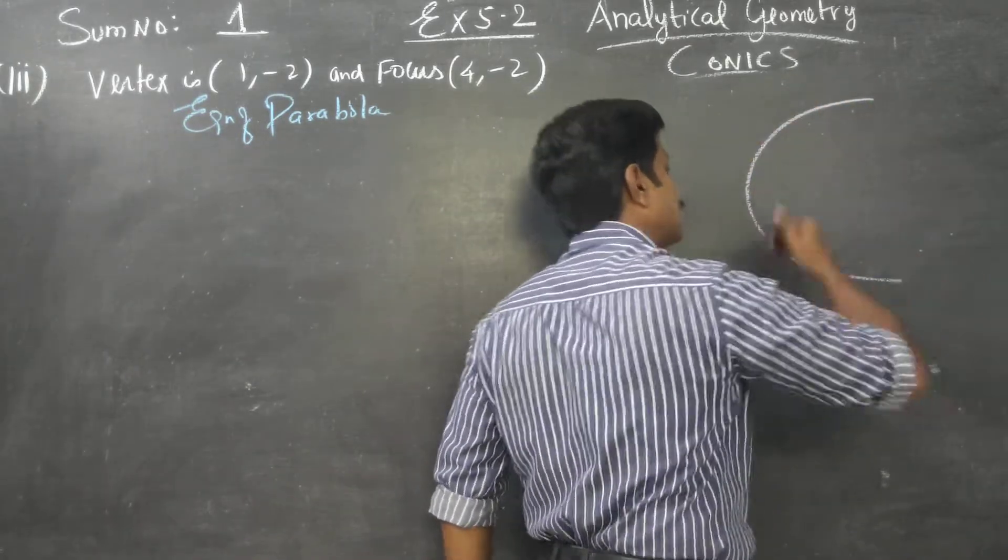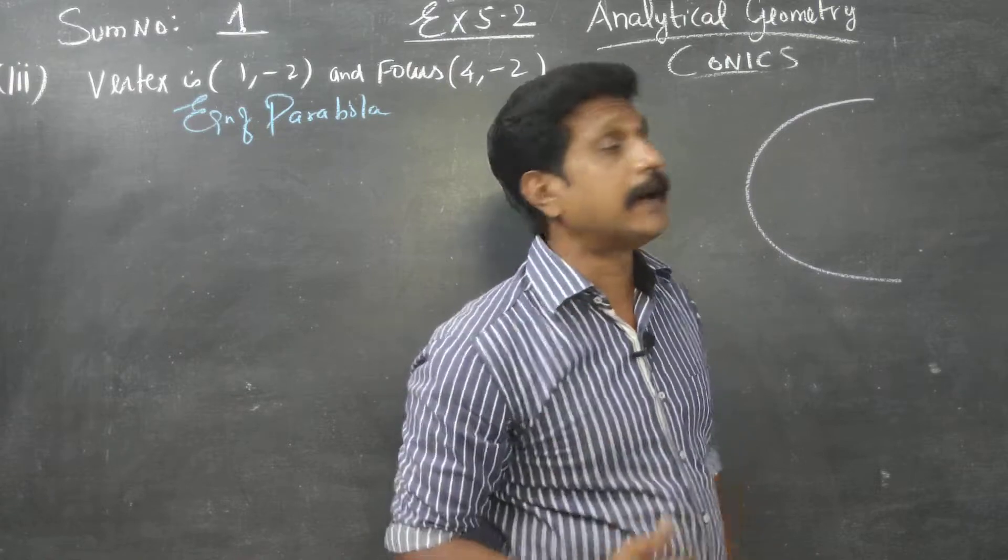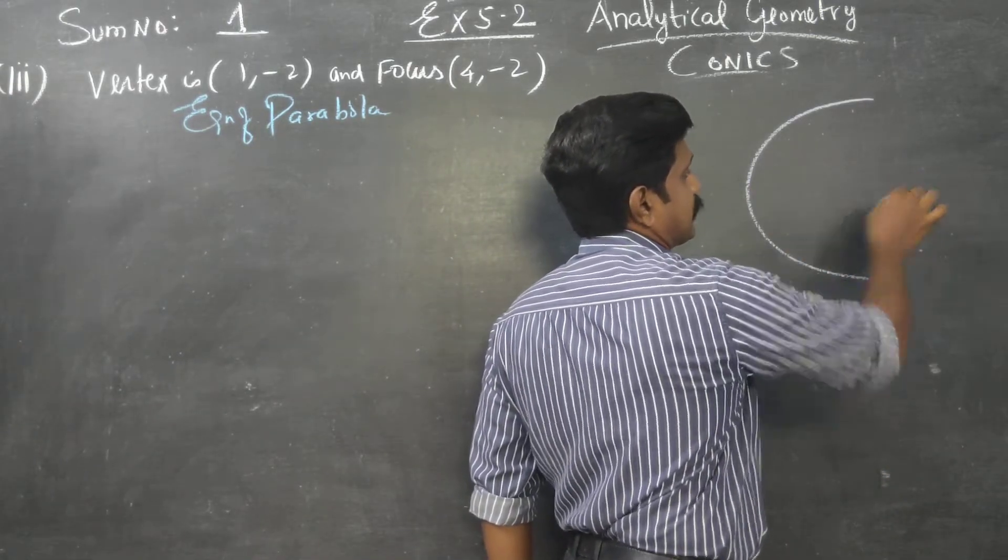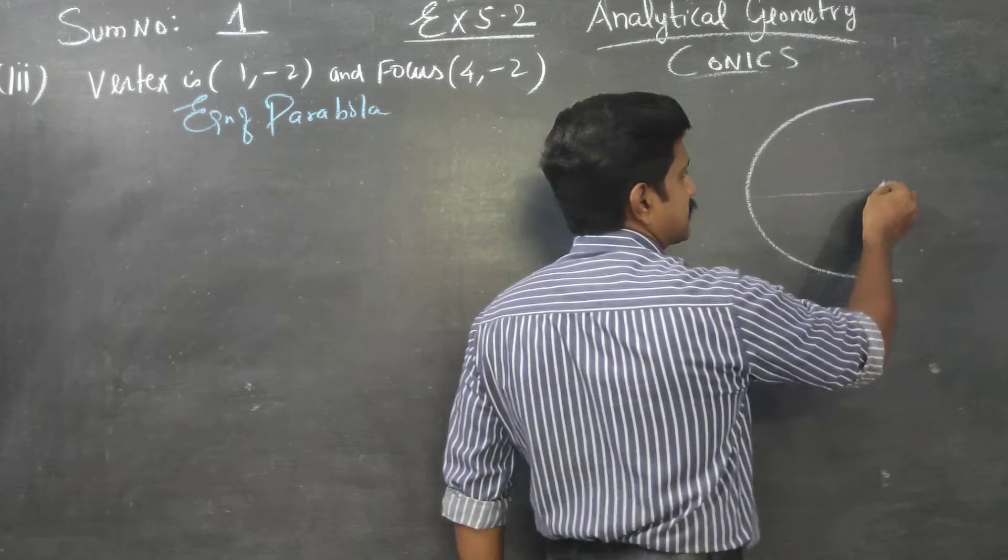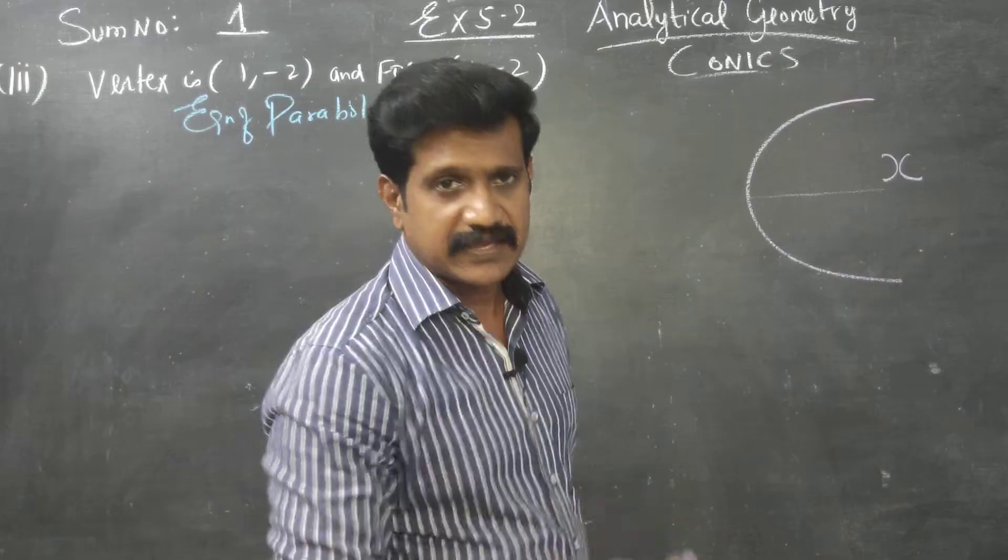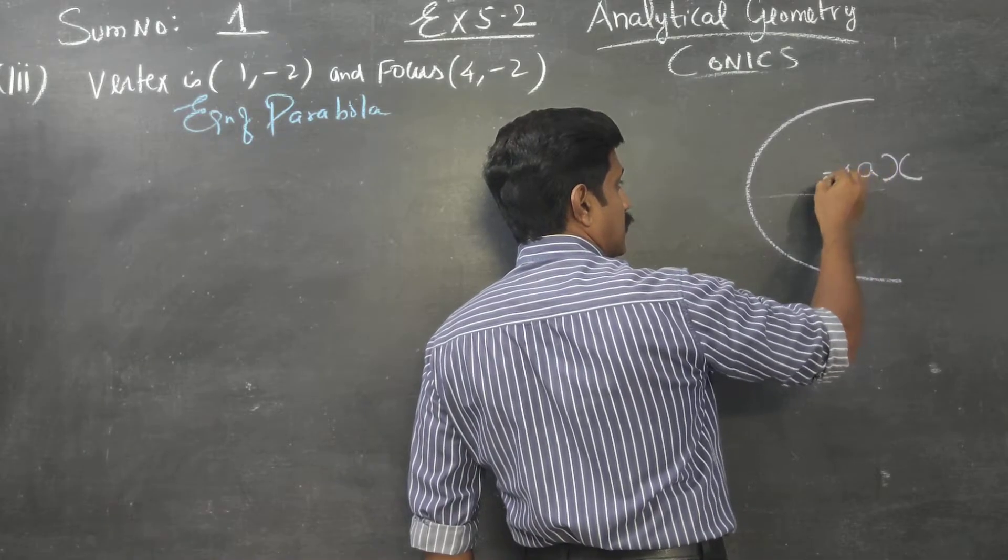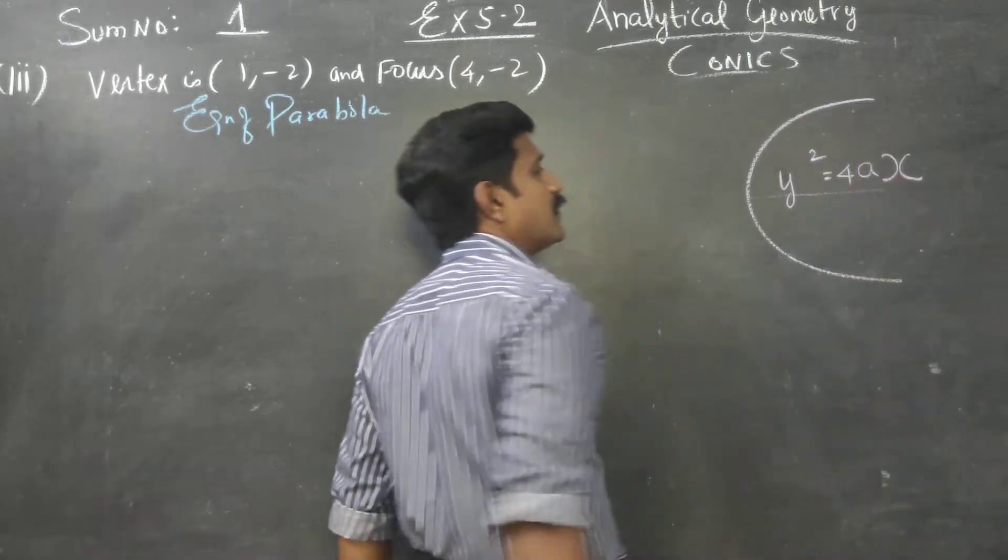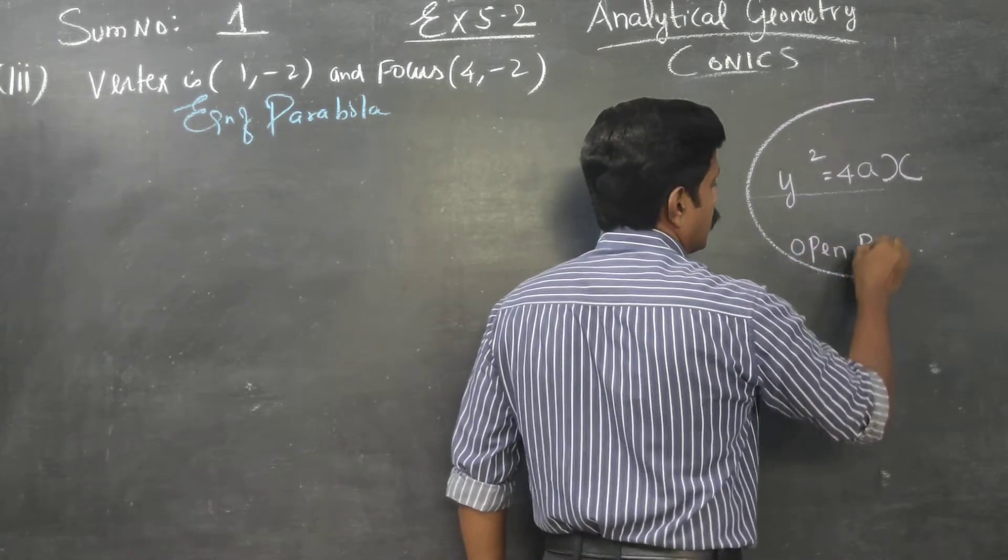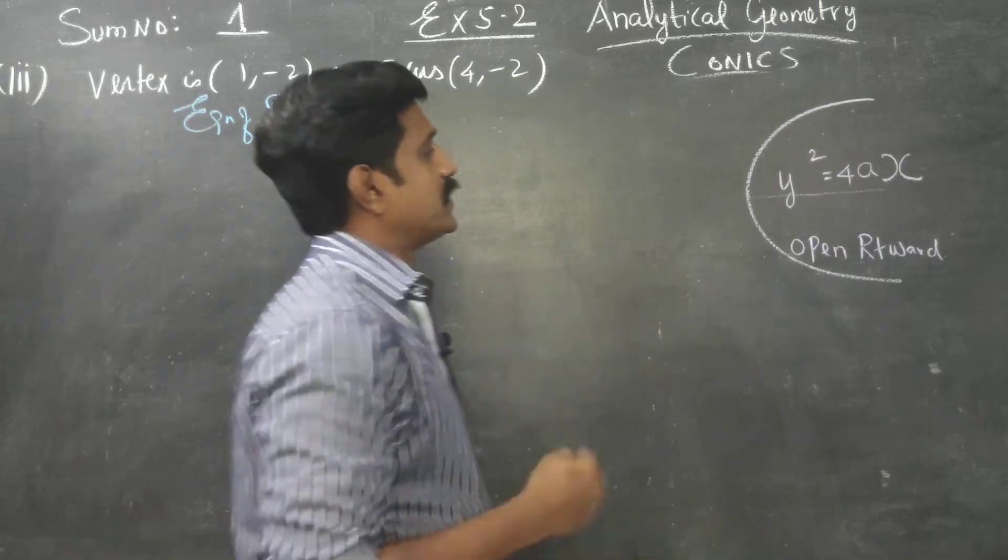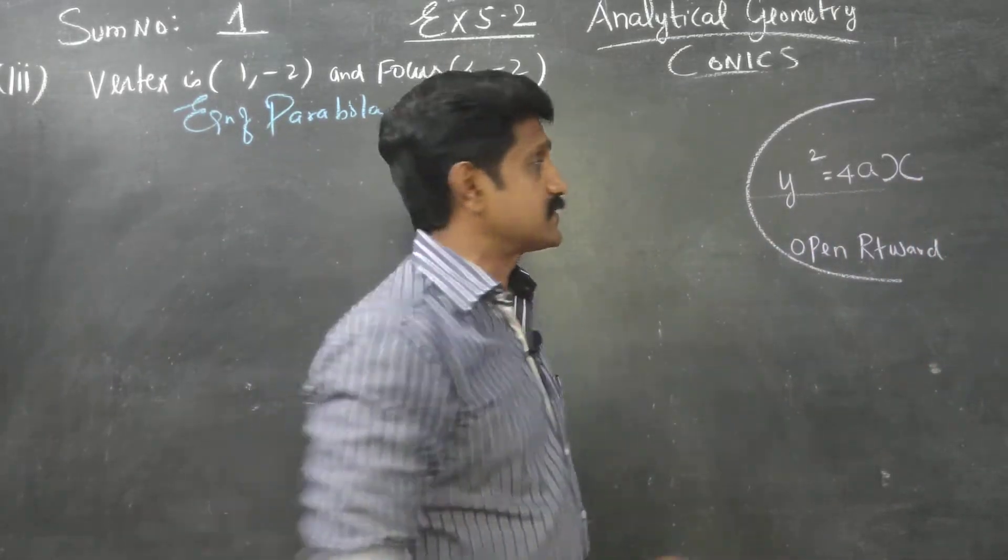Open rightward would be a formula. In the diagram, this parabola, the equation is y² = 4ax. This is open rightward with x-axis as the axis of symmetry.